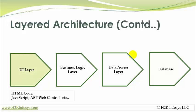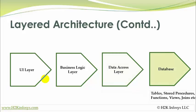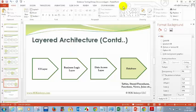In the UI layer you have HTML code, JavaScript code, and ASP.NET web controls. In the business logic layer you normally have C# code for .NET projects, or Java code for J2EE or Java projects. The data access layer handles interaction between the code and the database. The database layer itself contains tables, stored procedures, functions, views, joins, and so on.